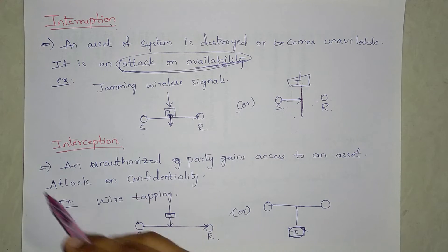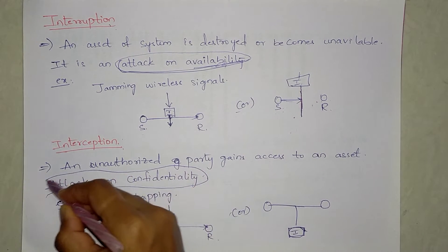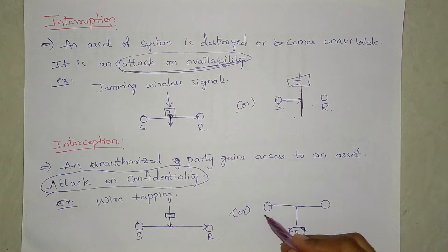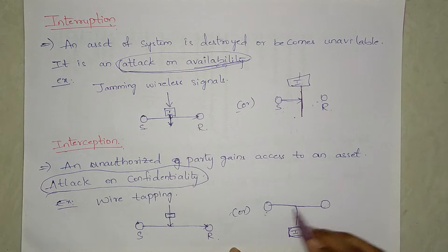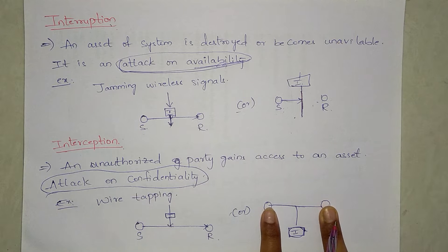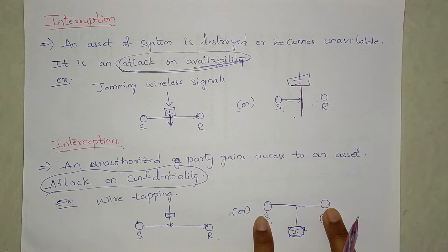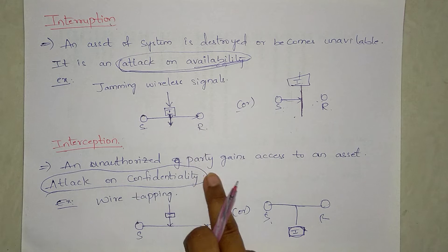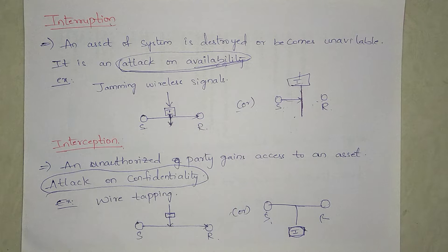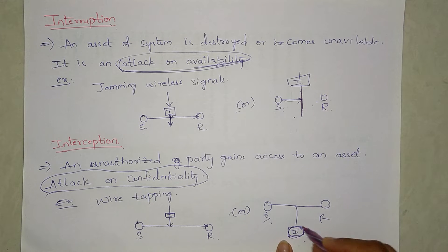There can be a lot of confusion between interception and interruption, but both are different. Interception means an attack on confidentiality. Confidentiality means the message or data should be known only between the two ends — sender and receiver — not by any other person.